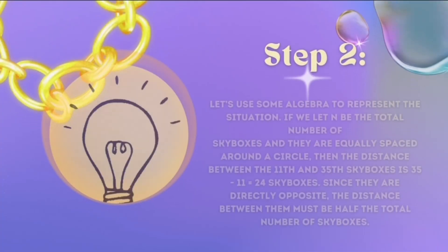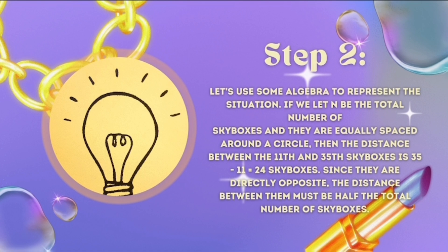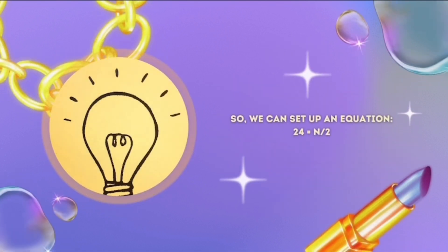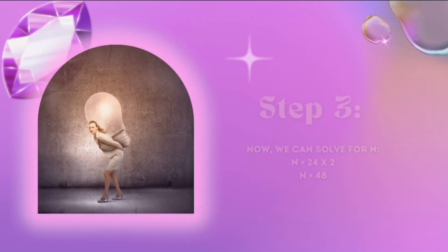Now we devise a plan using algebra. Let N be the total number of sky boxes equally spaced around the circle. The distance between the 11th and 35th sky boxes is 35 − 11 = 24 sky boxes. Since they are directly opposite, this distance must be half the total number of sky boxes, giving us the equation: 24 = N/2.